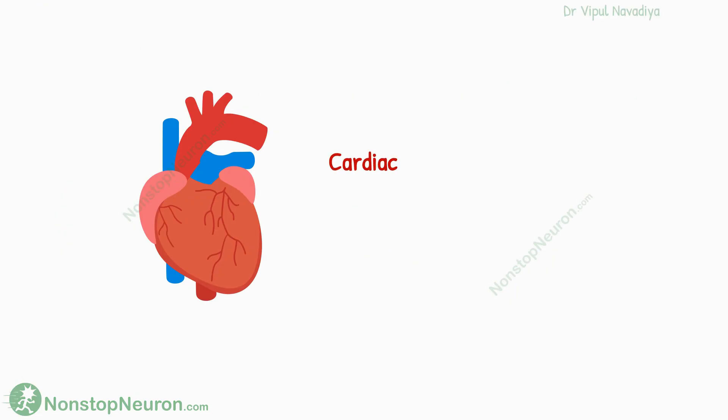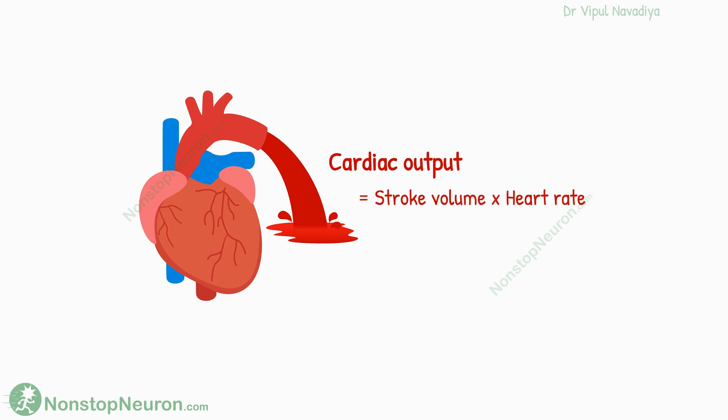Cardiac output is the net quantity of blood pumped out by the heart each minute. It's equal to stroke volume times heart rate. Under normal resting conditions, it's about 5 liters per minute.